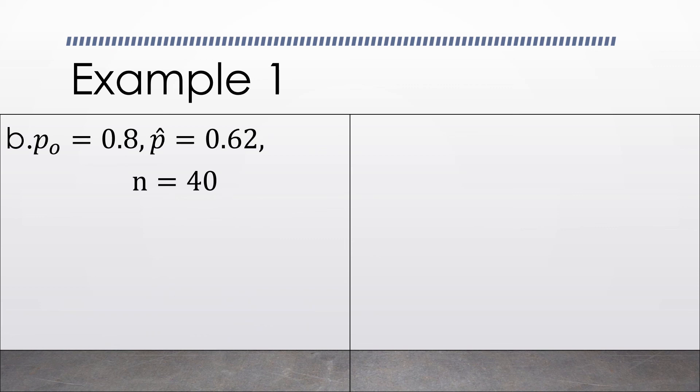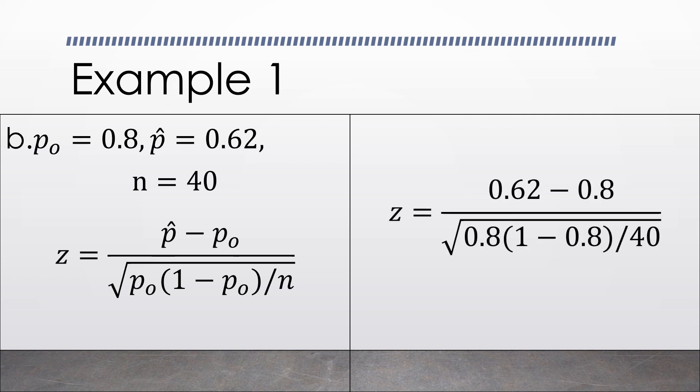Let us have the second example. We have here the formula, and as we substitute the variables in the given formula by their values, we have 0.62 minus 0.8, all over 0.8,